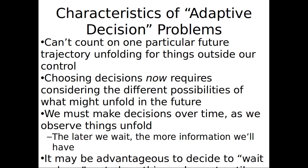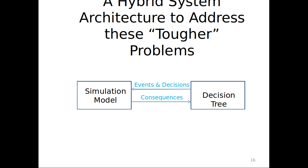A few characteristics of adaptive decision problems: we can't count on one trajectory playing out, we have to deal with a variety of possible trajectories. Choosing a decision now requires not just looking at what's happened until now but what could happen in the future. We need to make decisions over time as things unfold rather than making our choice up front and sticking to it, and it may sometimes be advantageous to defer our decision until more information comes in. To address these problems, we combine a simulation model with a decision tree.